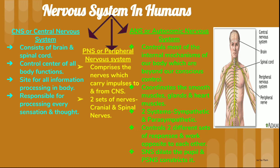The central nervous system is constituted by the brain and spinal cord. It is the control center of all the body functions. It is the site of all information processing in our body, and this CNS is responsible for processing every sensation and thought which arises in our body.